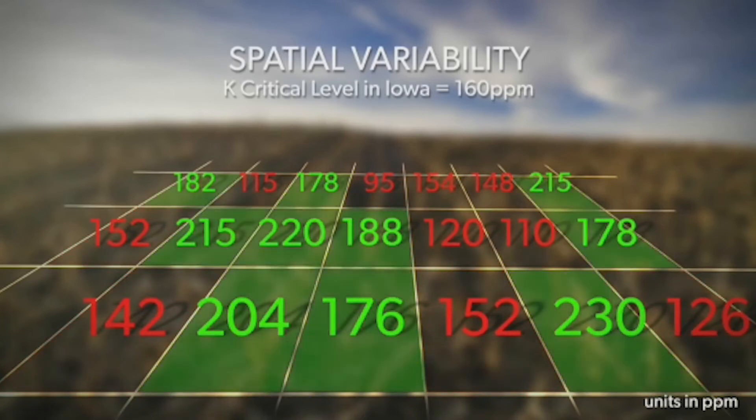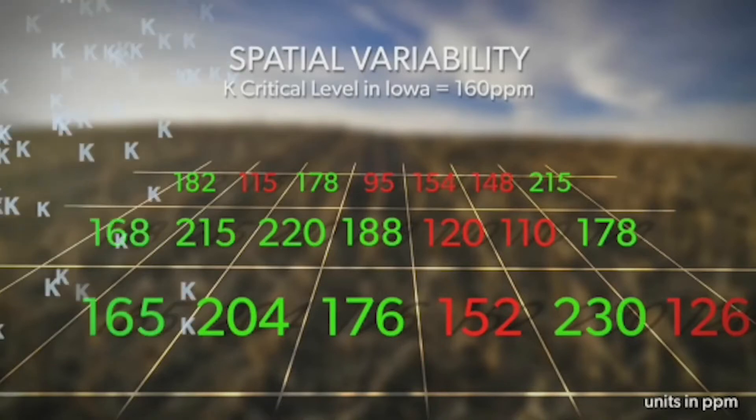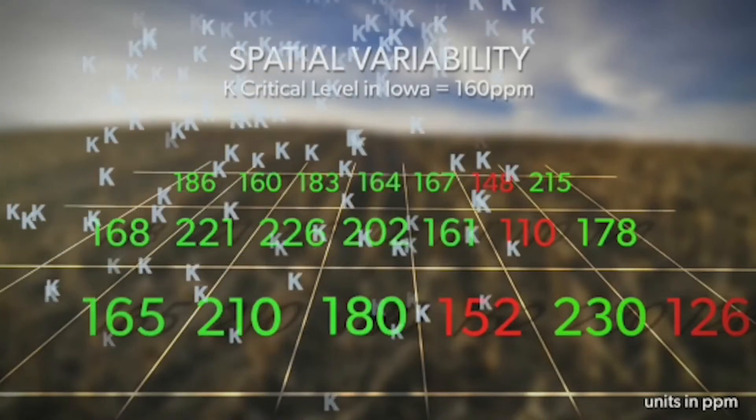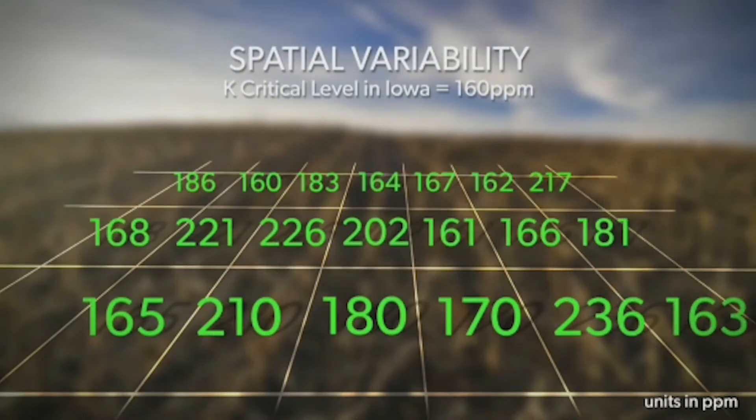That's what we mean by spatial variation. Built into this new calculator is a model that estimates the distribution of the lows and the highs, and how much K is needed to ensure that we fertilize that area adequately so that we maximize our yield and our economic return. So let's run through a scenario to see how this works.